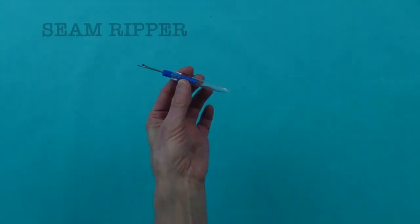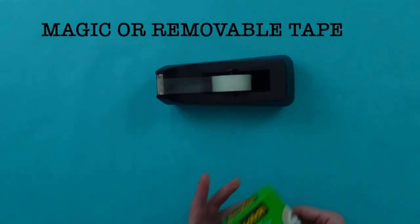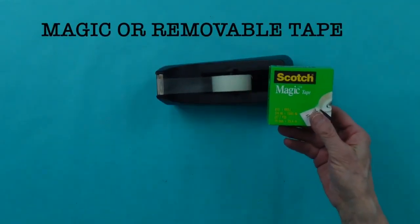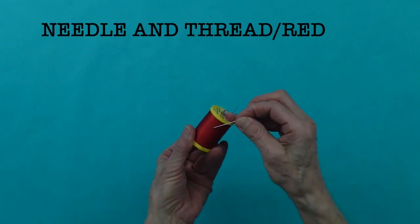And you need a good eraser, a seam ripper, tape. I usually use magic tape. You can also get removable tape, a needle and thread, preferably red thread.